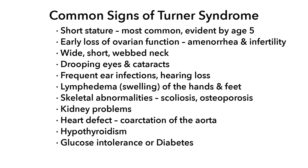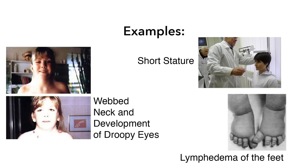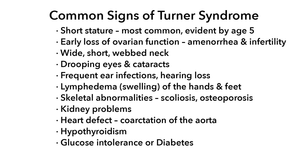The following are some signs and symptoms of Turner Syndrome: a short stature, which is the most common and evident by age 5; early loss of ovarian function, which causes amenorrhea and infertility; wide short webbed neck; drooping eyes and cataracts; frequent ear infections and hearing loss; lymphedema or swelling of the hands and feet; skeletal abnormalities such as scoliosis and osteoporosis; kidney problems; heart defect such as coarctation of the aorta; hypothyroidism; and glucose intolerance or diabetes.